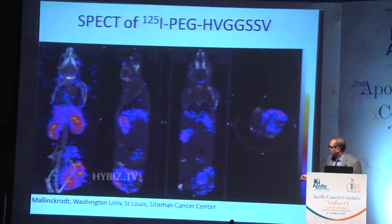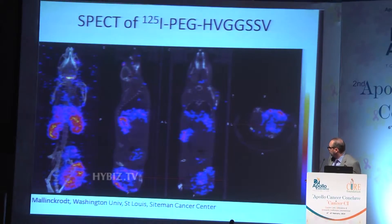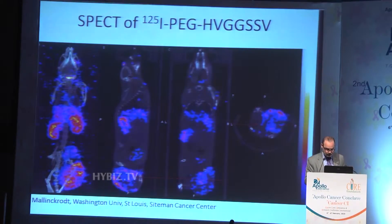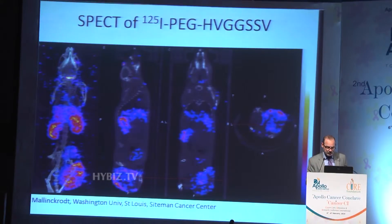That which remains bound to the nanoparticles is in this tumor in the hind limb of the mouse model — this is the sagittal section and the coronal section in the animal model. So we're able to image the biodistribution of nanoparticle drug delivery.